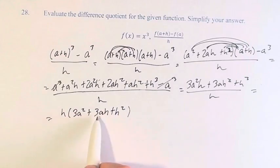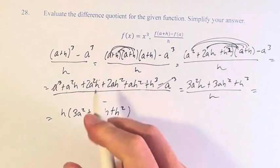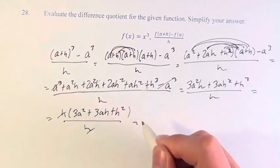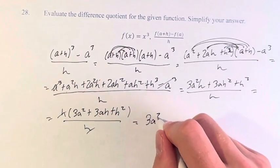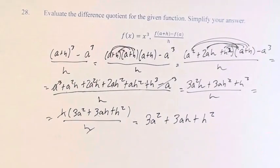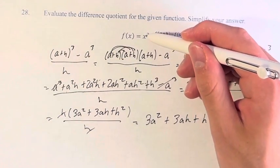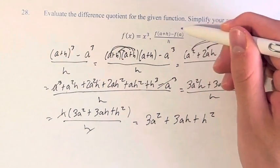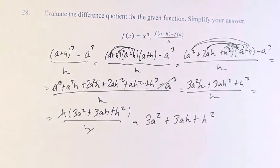This is what happens when you divide all these terms by h. These cancel and our final answer is 3 a squared plus 3 a h plus h squared. This is the difference quotient for f of x is equal to x cubed.